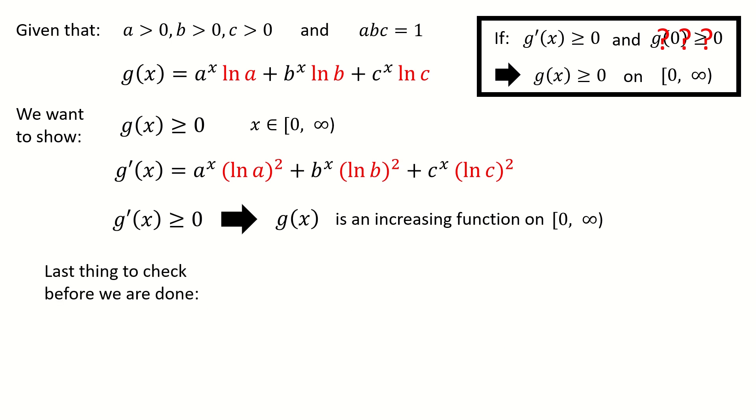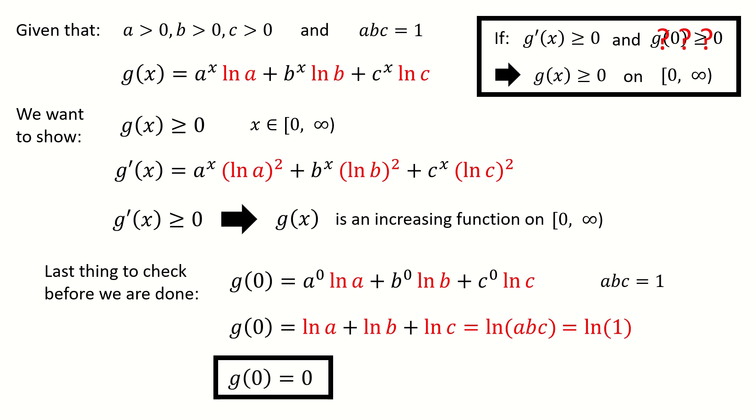So the last thing to check is to check g(0). Here is g(0). And we know a^0 is 1, b^0 is 1, and c^0 is 1. So we got g(0) equals to the sum of the logs. And we can rewrite the summation of log into the product inside the log. So we got ln(abc). And remember the condition we are given. The product of abc is 1. So we got ln(1). So now we got g(0) is 0. So I remove the question mark. So we are done actually.